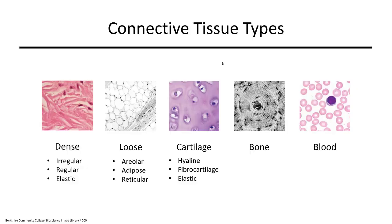These are the different types of connective tissue — quite a lot. There's dense, loose, cartilage, bone, and blood. In the dense category we have three different types, in the loose also three different types, and the cartilage as well.